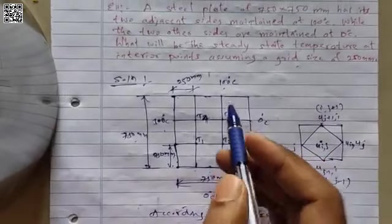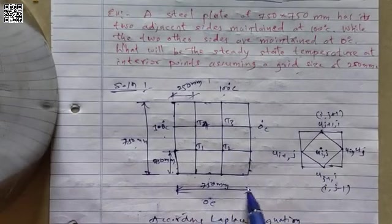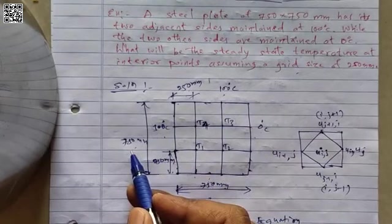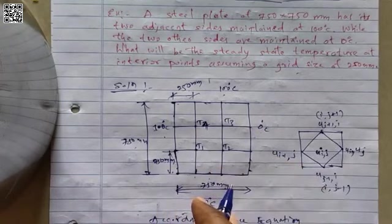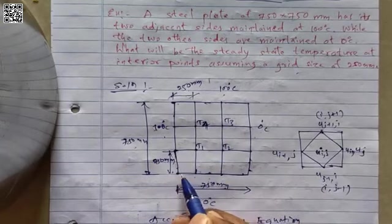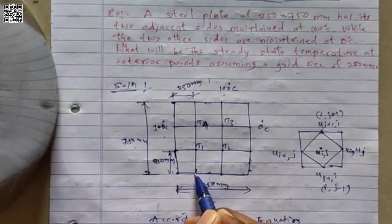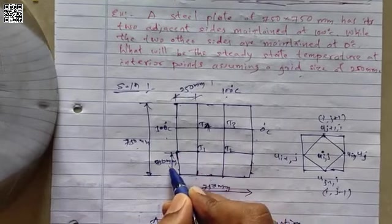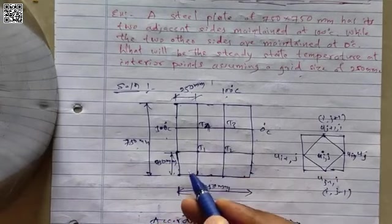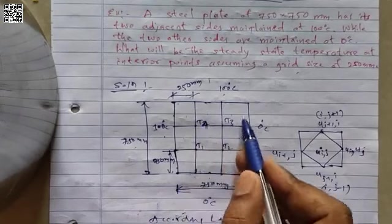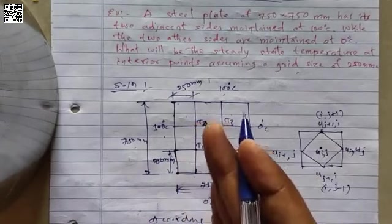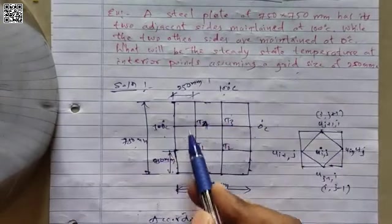The plate is 750 by 750 millimeters in the x and y direction — it is a square plate. The plate is divided into a grid size of 250 millimeters, meaning from point to point in both x and y directions it is 250 millimeters. Dividing by a grid size of 250 millimeters, I get 9 blocks — 9 grids in total.